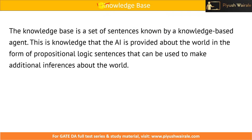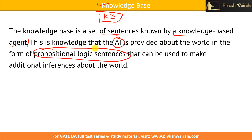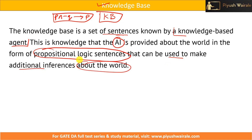Now, what is a knowledge base? Whatever data or information we are going to feed to a particular AI model is indicated by the knowledge base, that is KB. All the data or information is put inside this knowledge base. The knowledge base is a set of sentences known by a knowledge-base agent — this is the knowledge that AI is provided about the world in the form of propositional logic sentences, for example, P and negation of Q implies P. This type of propositional logic is used by the knowledge base to infer something and make additional inferences about the world.